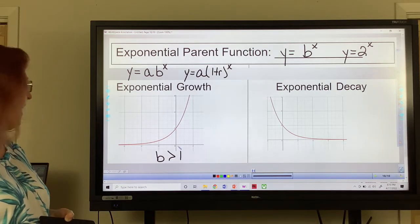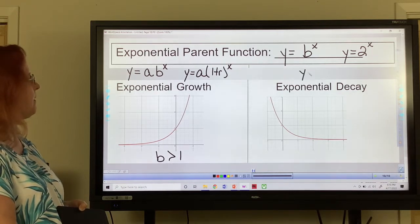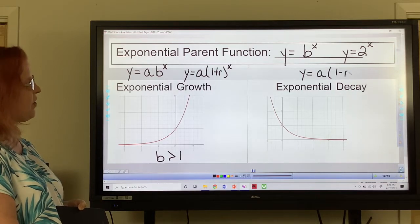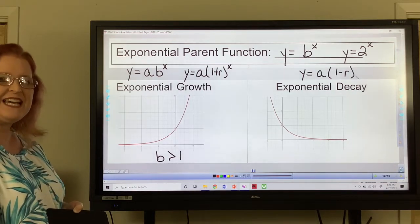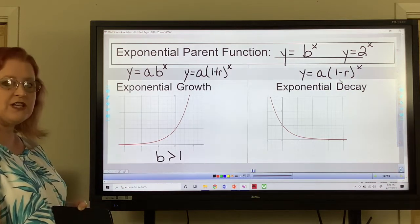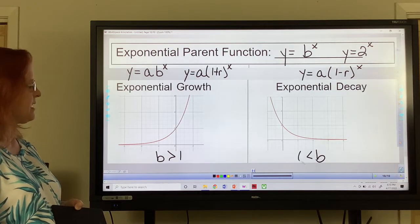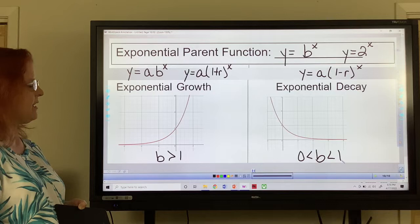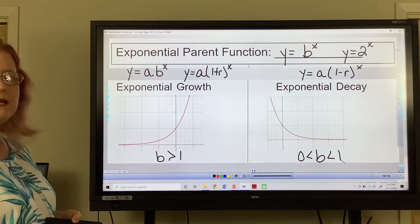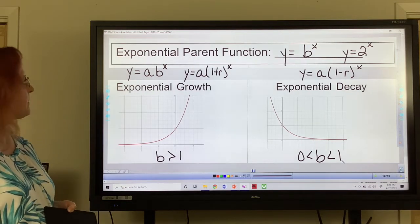If it's not greater than 1 then it's decay. So this one will be 1 minus r and that r is your rate and it's generally a percentage and so you'll have to convert it to a decimal. And so in this case the b is going to be sandwiched between 0 and 1. It can't be 0 and it can't be 1 but it can be 0.1, 0.2, or a decimal in between there.